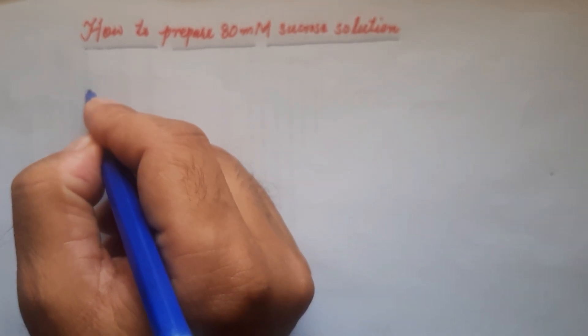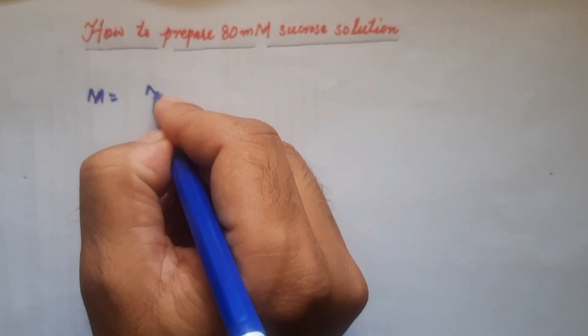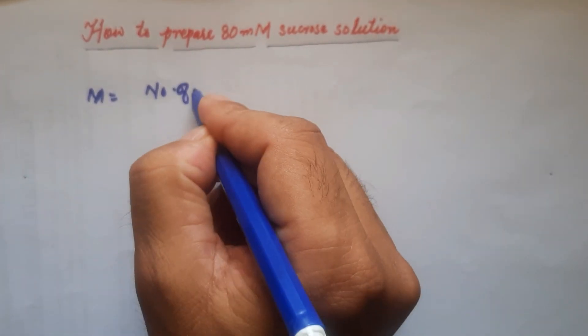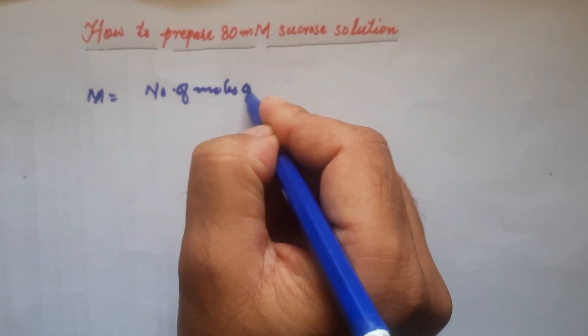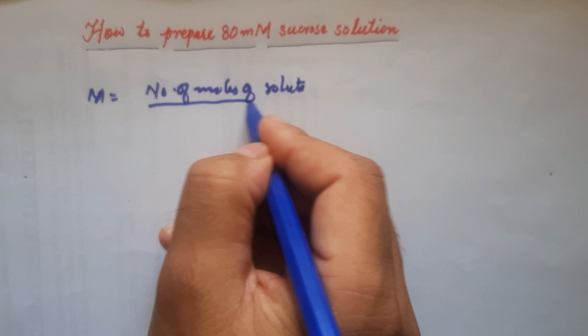We can write that like this: molarity is equal to number of moles of solute divided by volume of solution in liter. So this is the equation for preparation of a molar solution.